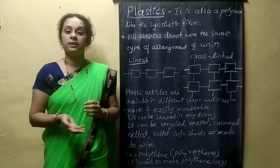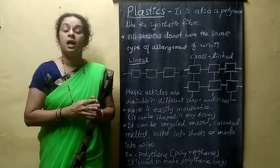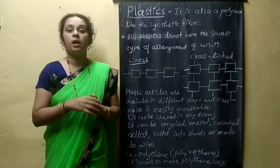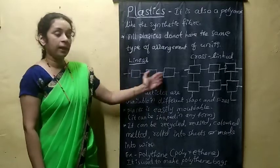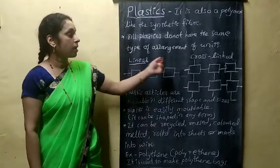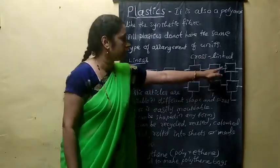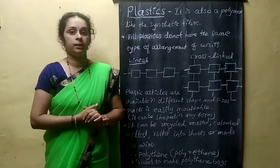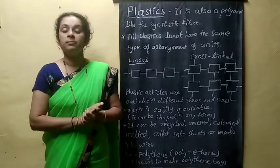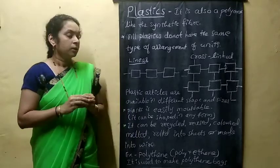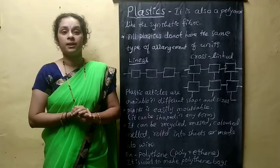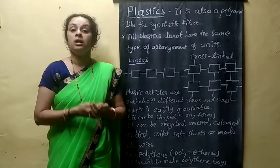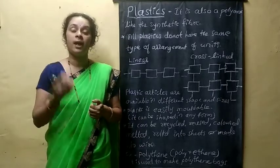Different arrangements give plastic different shapes, sizes, and properties. In some plastic articles, units are arranged in a straight chain — that is, in a linear form. In some articles they are arranged in a cross-linked form. These two arrangements — linear and cross-linked — give different shapes and properties to plastic materials.